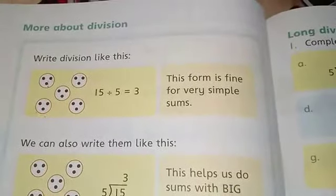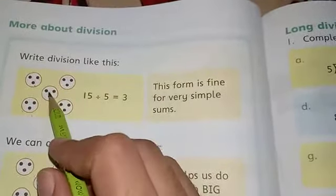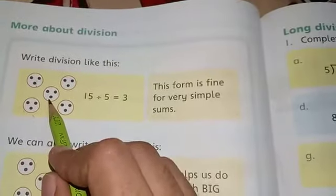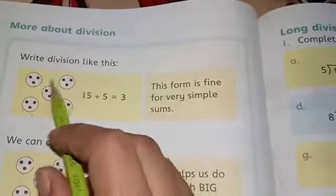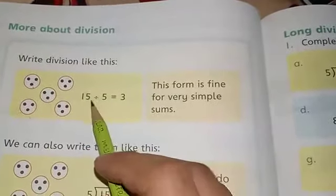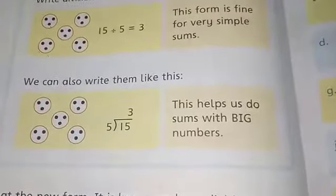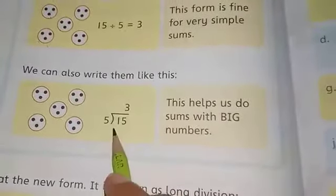These are easy questions. Like this, you have five circles with three dots inside them. If we multiply those three dots, we get fifteen. Fifteen divided by five is equal to three. We can also write them like this. You have a new method.